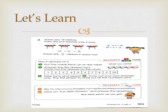Let's learn from your book, page number 104. Question number 4: There are 12 rabbits. They are put equally into 4 hats. Take the help of the 4 times table. Does 12 come in the 4 times table? Yes — 3 4s are 12. So 12 divided by 4 equals 3. There are 3 rabbits in each hat.